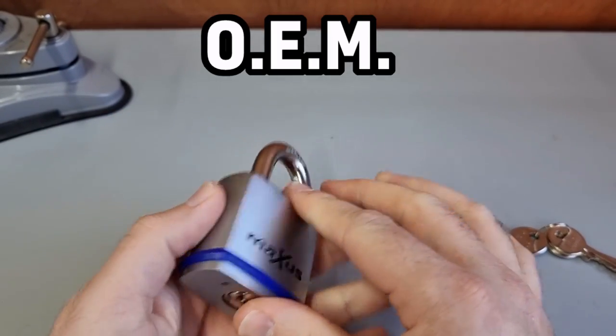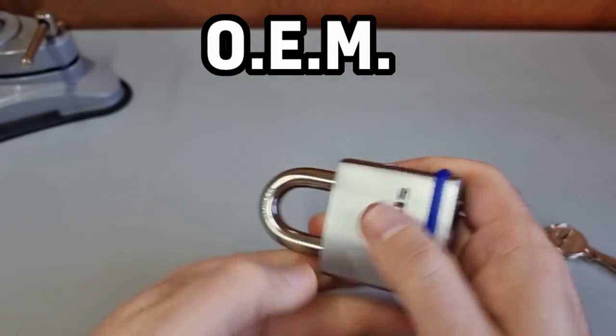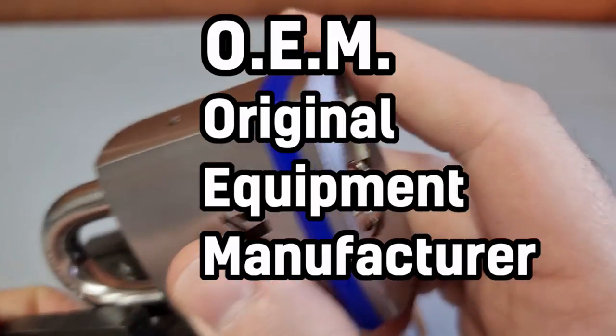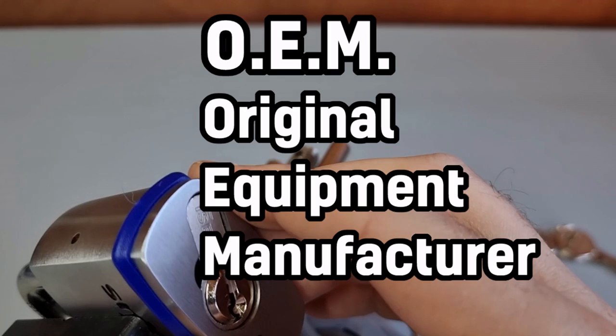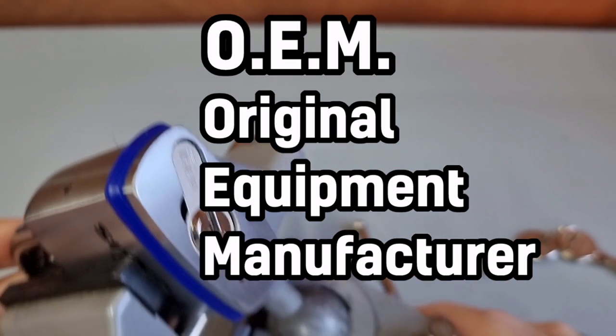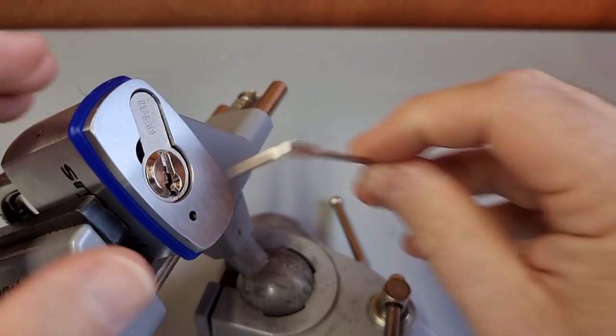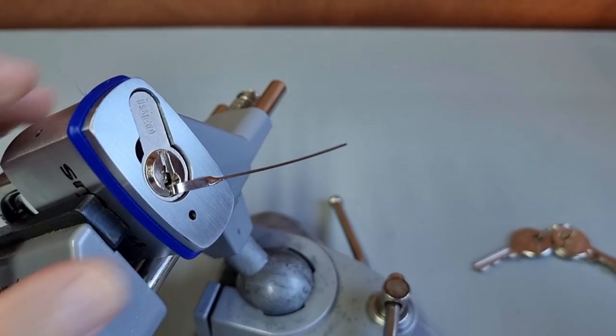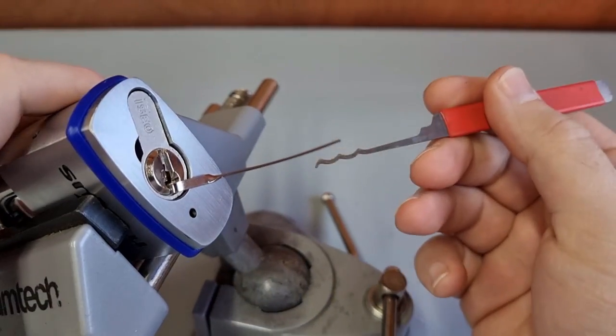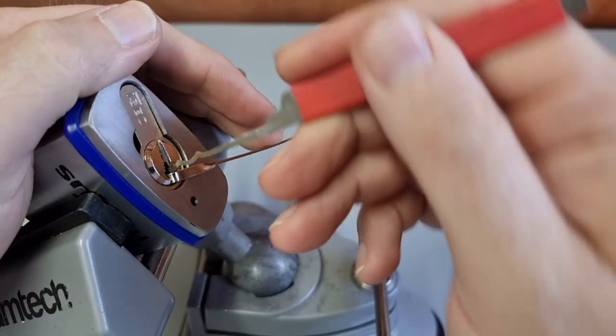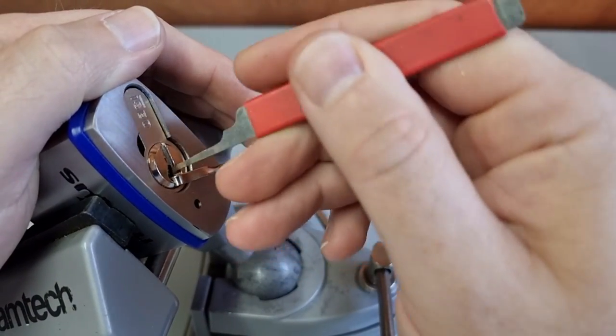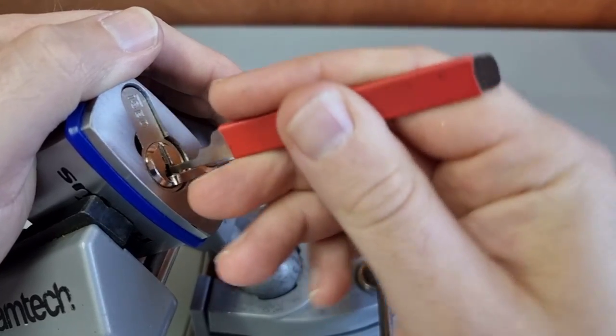OEM is where a company abroad, probably China or Taiwan, makes products and puts your branding on them. We've got this ISEO half euro in there. Proper twisted tension wrench and practice Bogota.